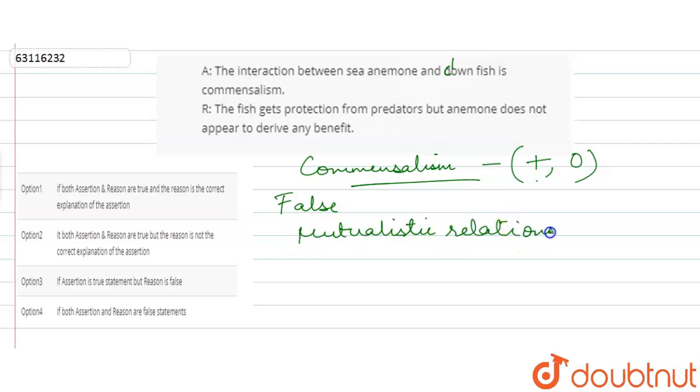They show the kind of interaction as mutualism, where sea anemone is an immobile organism, and then it travels with the clownfish.